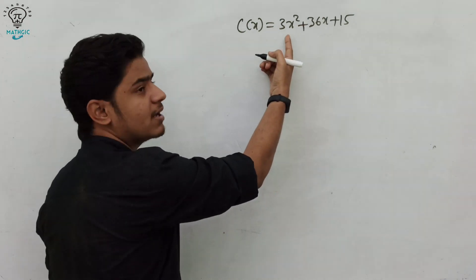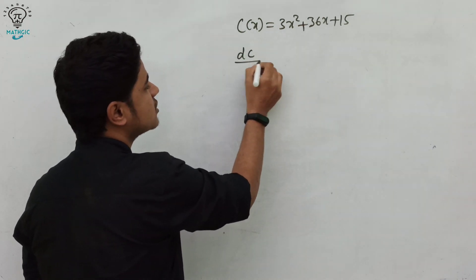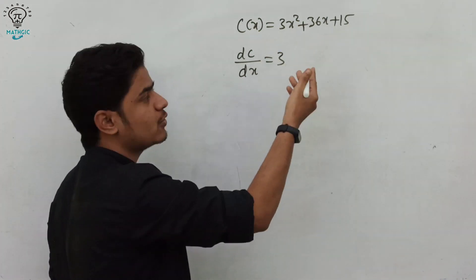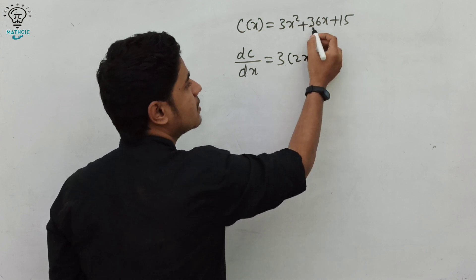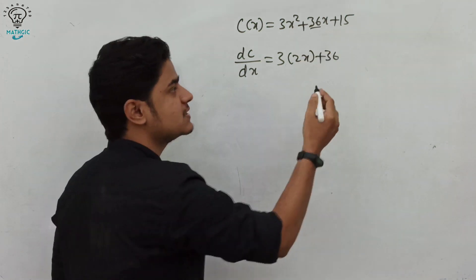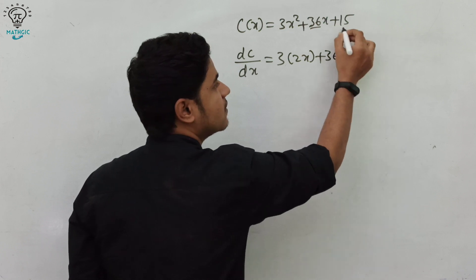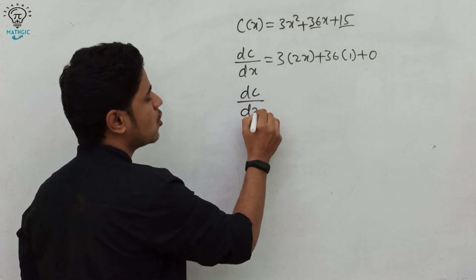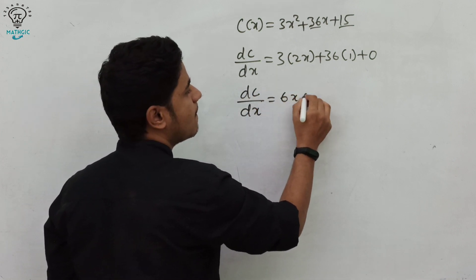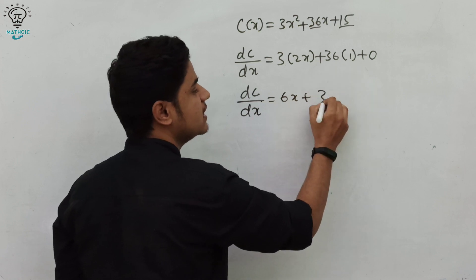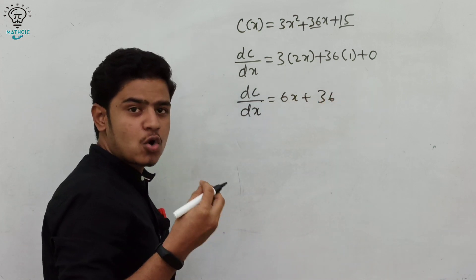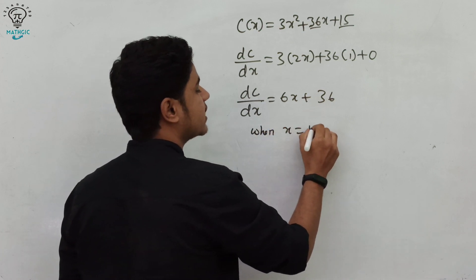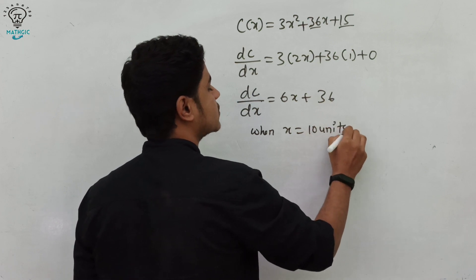Differentiate c(x) with respect to x: dc/dx = 3 × 2x + 36 × 1 + 0 = 6x + 36. We need to find the marginal cost when the company produces x = 10 units.